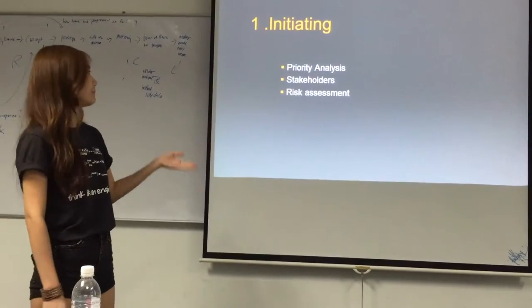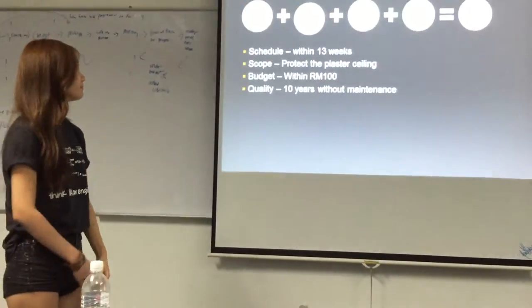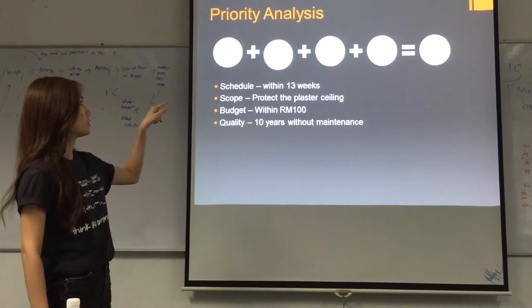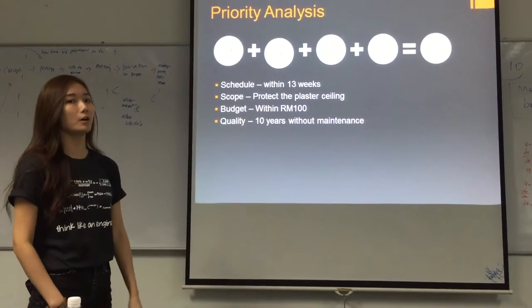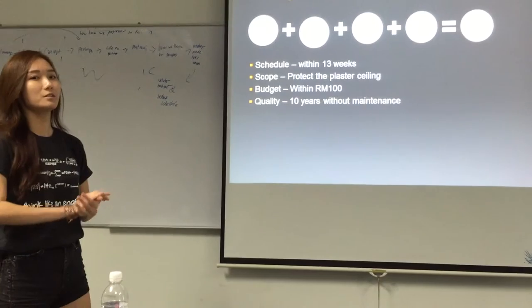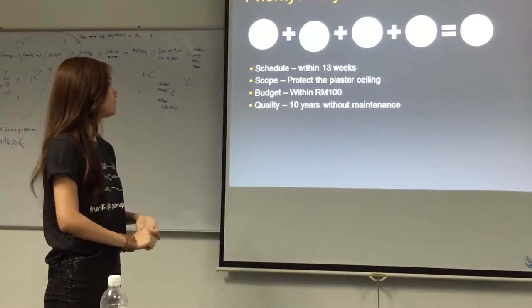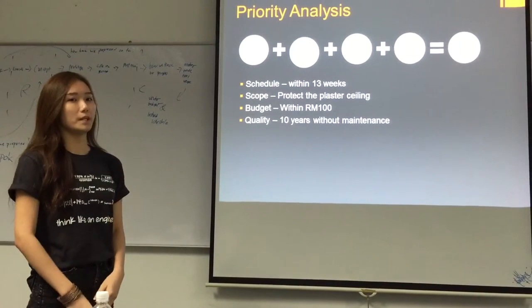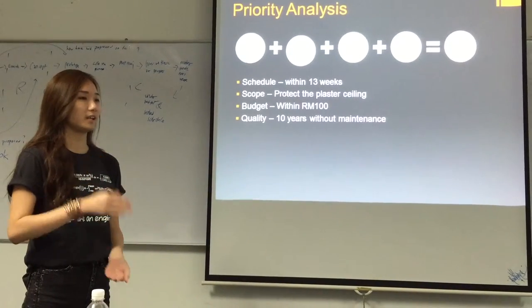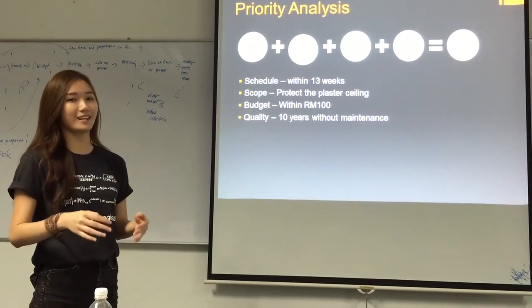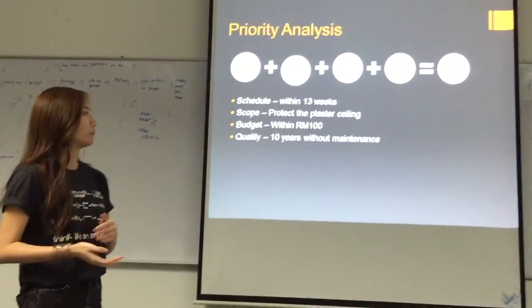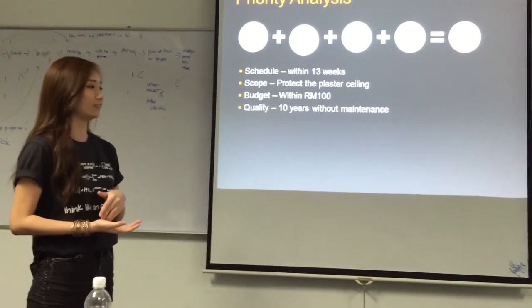Under initiating, there are priority analysis, stakeholders, and risk assessment. The project consists of four priority aspects: schedule, scope, quality, and budget. For our schedule, we plan to finish our project within 13 weeks. Our scope is to protect the plaster ceiling, which is our main objective. For budget, we catered our budget to be within 100 ringgit. For our quality, our product can be maintained for 10 years without maintenance.